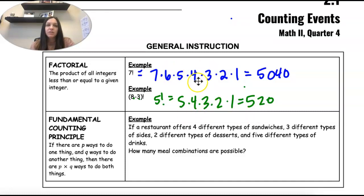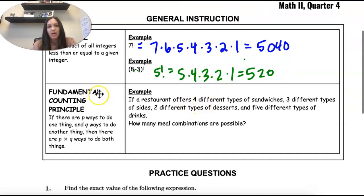So we use factorials when we're counting. Another way we count is using the fundamental counting principle, which says if there's a certain way to do one thing and a certain way to do another thing, then we multiply those to see the ways we could do both things.